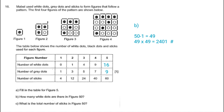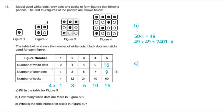Coming to part C of the question: what is the total number of sticks in figure 50? We noticed that the number of sticks for figures 1, 2, 3, 4, 5 are all multiples of 4. So let's write them as: figure 1 is 4 times 1, figure 2 is 4 times 3, figure 3 is 4 times 6 which is 24, figure 4 is 4 times 10 which is 40, and figure 5 is 4 times 15 which is 60.